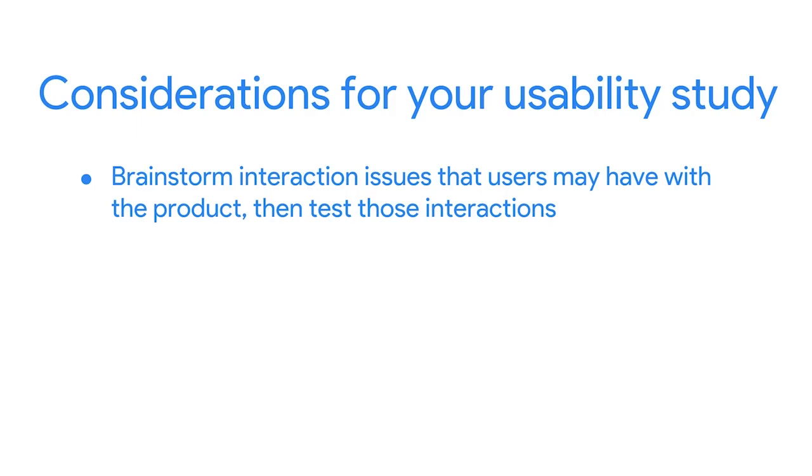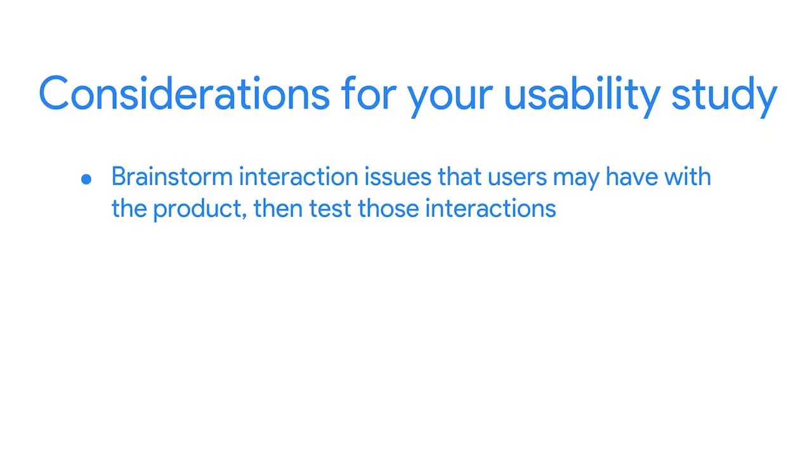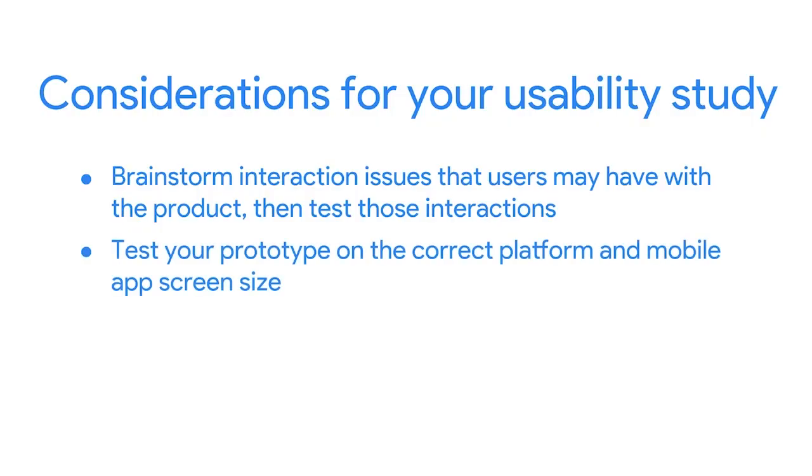If you'd like a refresher on any of these steps, please go back to the earlier course material. Before you conduct your study, here are a few things to consider when conducting usability studies on hi-fi prototypes for dedicated mobile apps. First, it's helpful to brainstorm interaction issues that users may have with the product and then test those interactions. Since you've added more complex interactions in your high fidelity prototype, like overlays and motion, you want to make sure they're working correctly. Second, it's important to test your prototype on the correct platform and mobile app screen size. For example, if you designed your app for Apple iOS and its platform-specific interactions, don't test it on Android phones or with Android users who may be unable to easily use that platform.